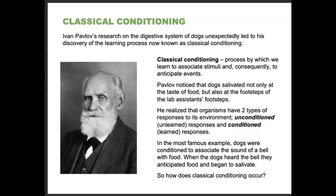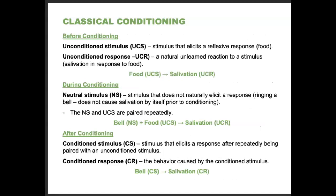In the most famous example, dogs were conditioned to associate the sound of a bell with food. When the dogs heard the bell, they anticipated food and began to salivate. Before conditioning, the unconditioned stimulus (UCS) — the unlearned stimulus that elicits a reflexive response — is the food. When you see food, you have the unconditioned response (UCR) of salivating — a natural, unlearned reaction to a stimulus. So food is the UCS and salivation is the UCR.